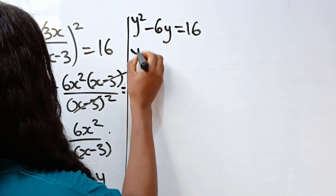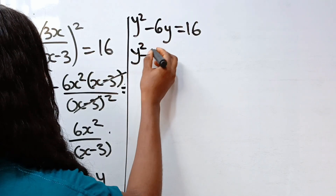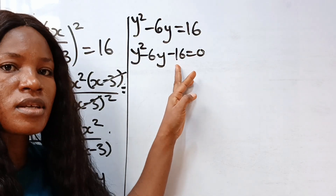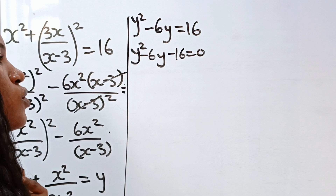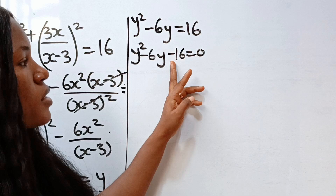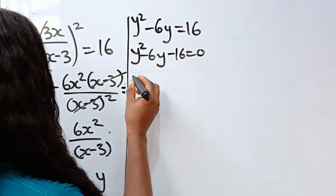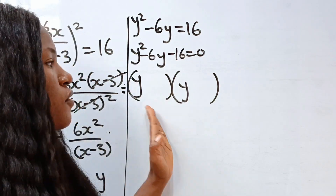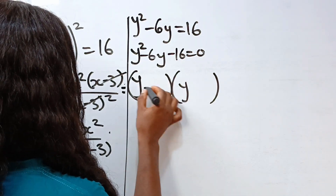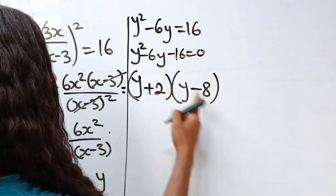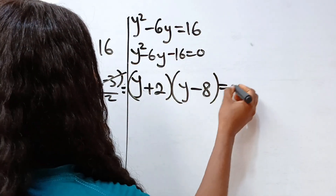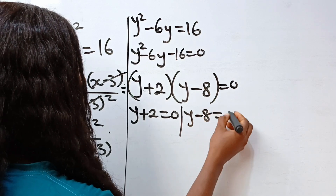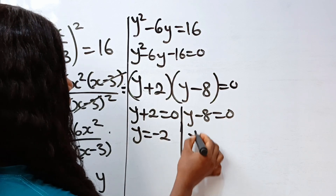Bringing 16 across: y squared minus 6y minus 16 equals 0. We need two factors of minus 16 that add to minus 6 — those are 2 and minus 8, since 2 times minus 8 is minus 16 and 2 minus 8 is minus 6. So we get y plus 2 equals 0 and y minus 8 equals 0, giving y equals minus 2 and y equals 8.